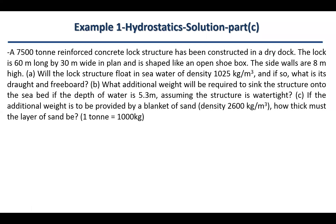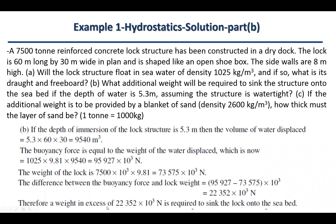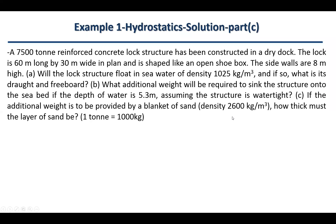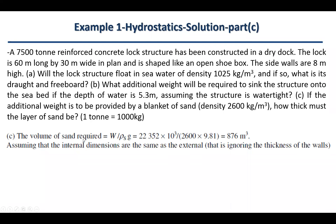For section C, the last part of example one, the additional weight is to be provided by a blanket of sand with a density of 2,600 kg/m³. We need to find how thick the sand layer must be. From section B, the additional weight required is 22,352,000 N, and we use the lock's plan dimensions to find the sand thickness.